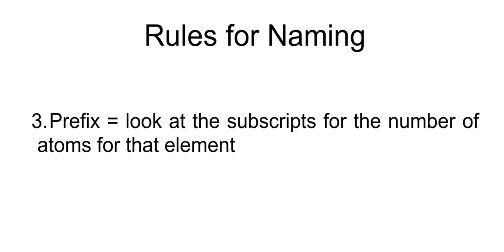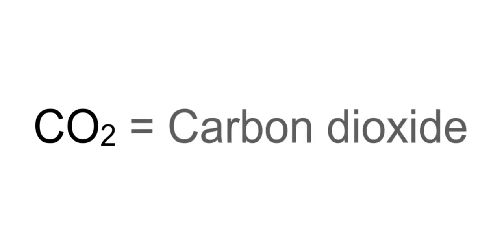The third rule is the prefix which will tell us the number of each element in the molecule. To determine the prefix we look at the subscripts. Now we are ready to look at an example, CO2. The name for this would be carbon dioxide because you have one carbon and two oxygens.